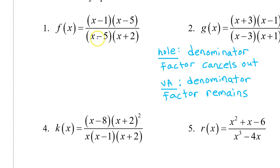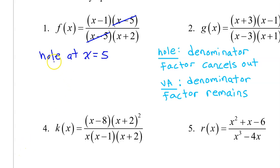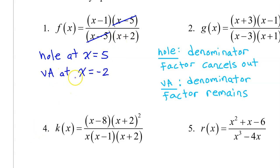For example, I see x minus 5 in the denominator, but that is going to cancel out with a factor in the numerator. Because it cancels out, this is going to give us a hole. We have a hole at x equals 5. Then we see a factor of x plus 2 in the denominator that does not cancel out with anything — a denominator factor that remains gives us a vertical asymptote. So we have a vertical asymptote at x equals negative 2.